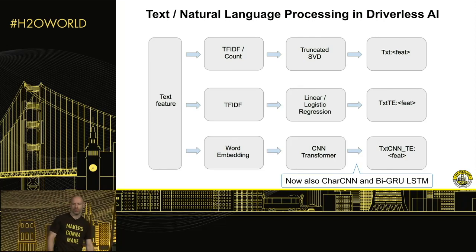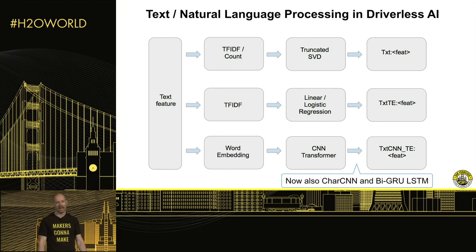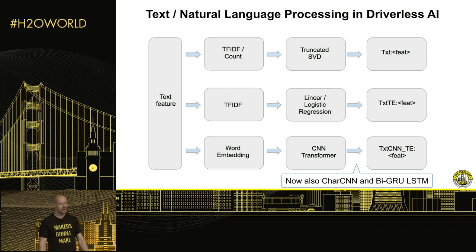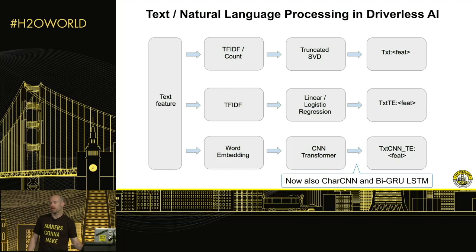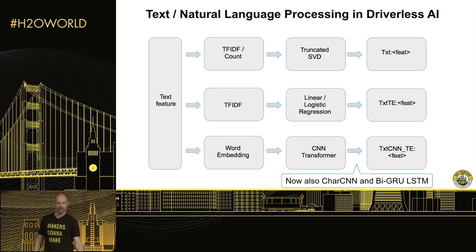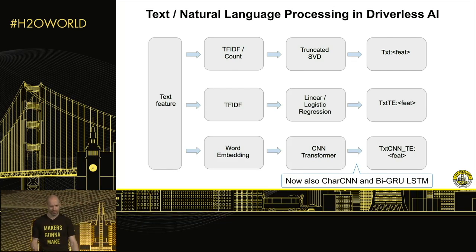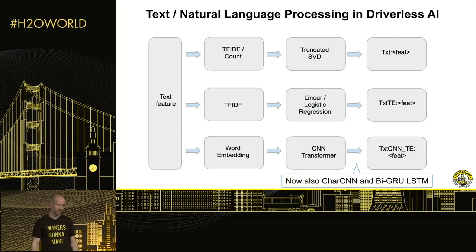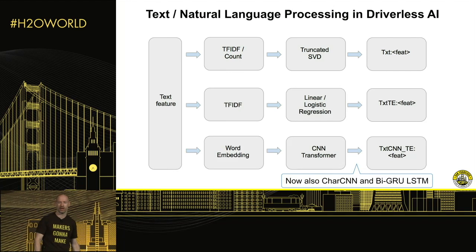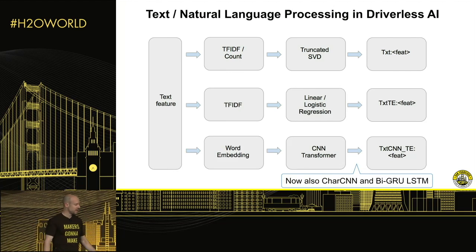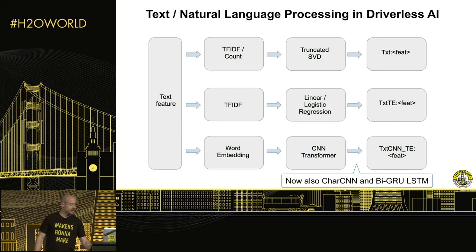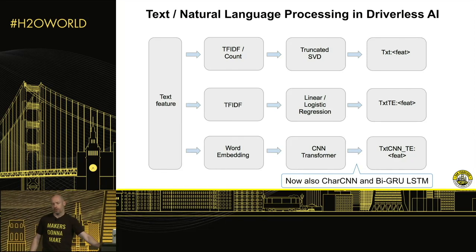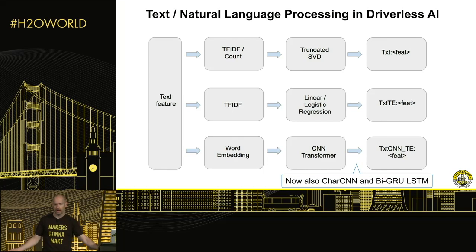We have three different types of text TensorFlow graphs — two are CNN-based and one is LSTM-based — and you can choose which ones you want. You also have classical statistical count-based features. For example, you can count how many times the word 'me' shows up in a sentence. If it appears too many times compared to the average in a regular document, that means something. You don't need a neural net to tell you that — you can just count.